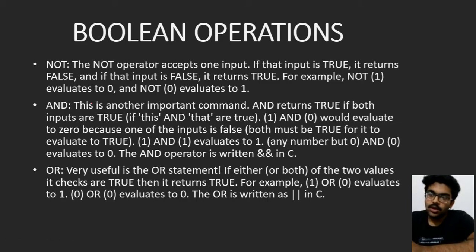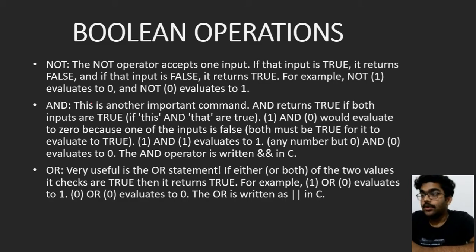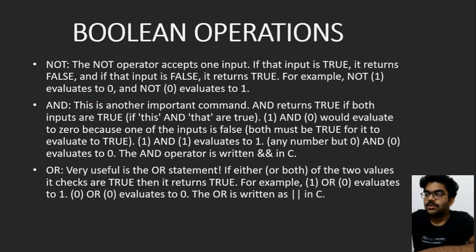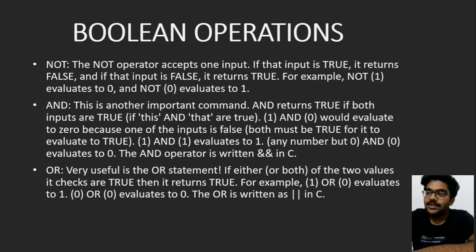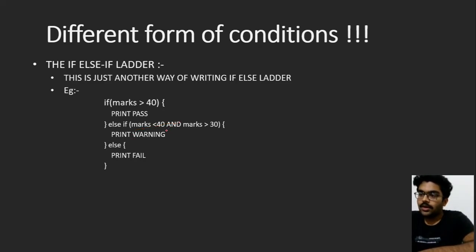The NOT operator is just an inverter — if the condition is true it returns false, and if the condition is false it returns true. The NOT operator accepts only one input: if input is true, it returns false; if input is false, it returns true. However, the NOT operator makes debugging very difficult, so it is better to avoid it and find another way to write that code. Using the AND boolean operator, we can convert two lines of code into one clean line.